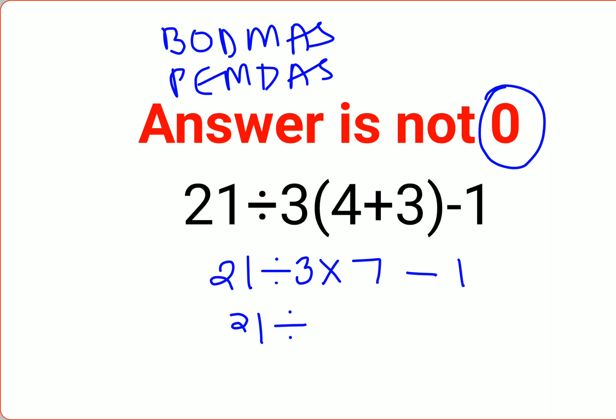Now they thought this is 21 divided by 3 multiplied by 7 is 21 minus 1, so 21 over 21 is 1 minus 1, answer is 0. No, at this point things went for a toss.